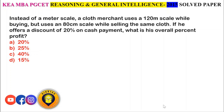Instead of a meter scale, a cloth merchant uses a 120 centimeter scale while buying, but uses an 80 centimeter scale while selling. If he offers a discount of 20% on cash payment, what is his overall percent profit? The merchant is cheating on both sides — using 120 cm while buying and selling only 80 cm instead of one meter.